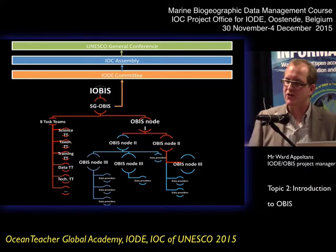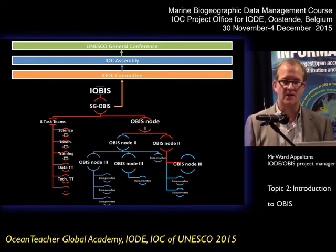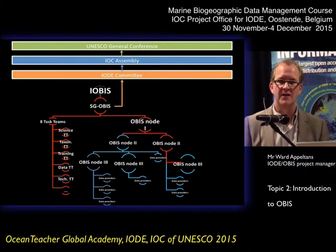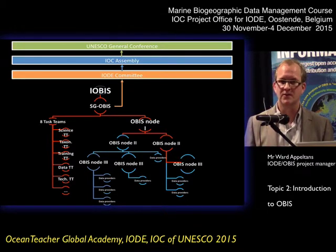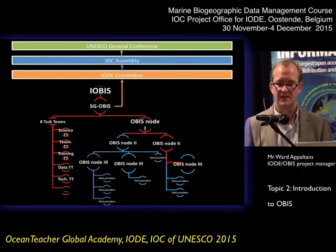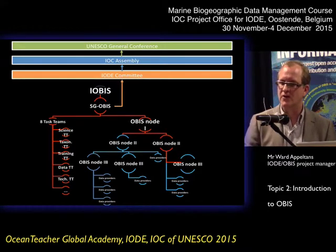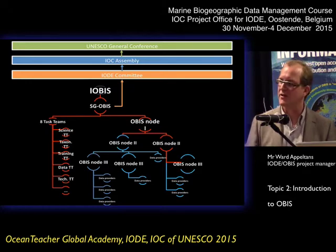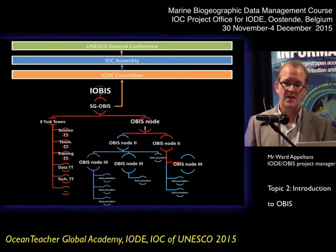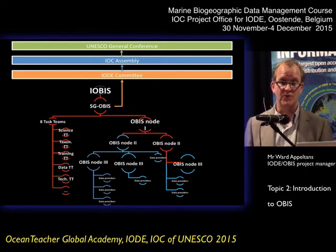In terms of governance structure, IODE is the program we run under. IODE programs in IOC can establish projects, and a steering group is meant to steer projects in IODE. IODE in 2011 established the OBIS project and the steering group. The steering group is composed of all the node managers and we have established task teams: a science advisory task team, a taxonomy task team, a training task team, a data task team, and a technical task team.